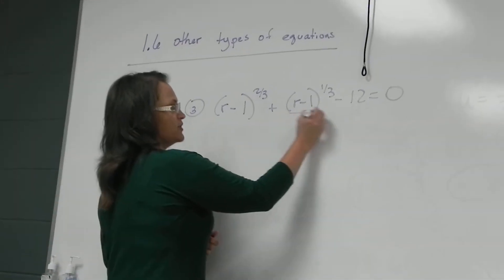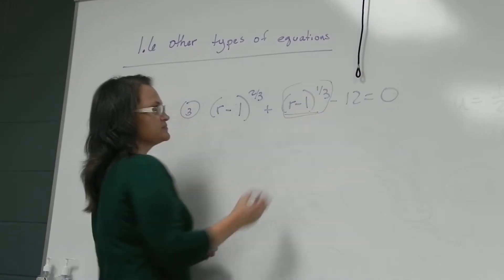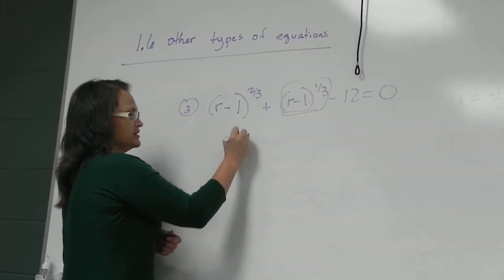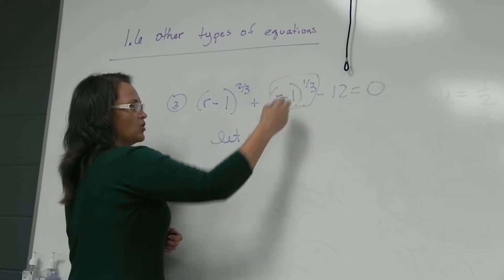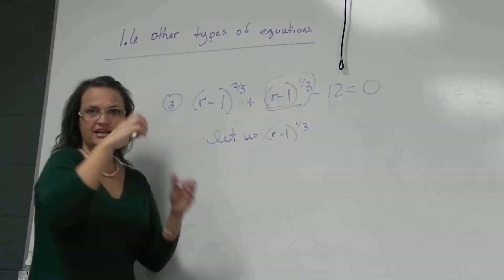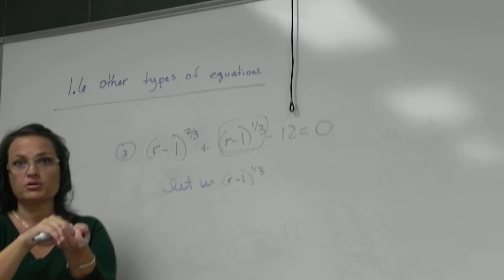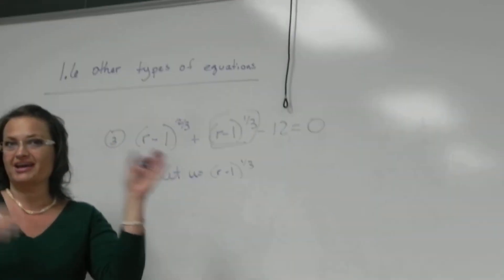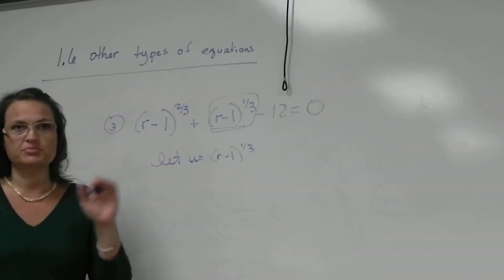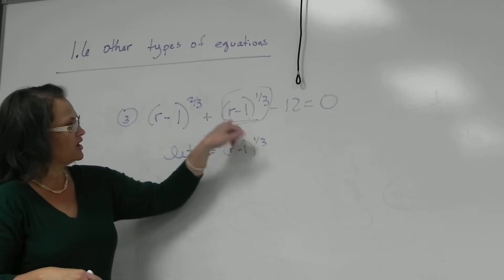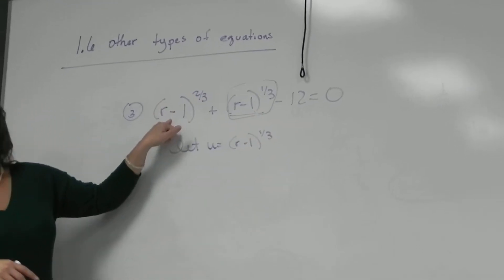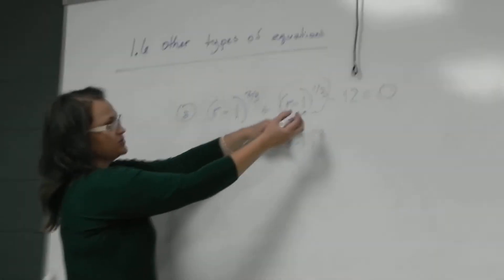So I want you to notice, if we call this whole thing u, so I'm going to let u equal this whole block. Now I know in the last problem we just let it equal just that variable, p^(-1), because the numbers in front had no relation to each other. But this whole block here is squared here. Now let's see this. Let me convince you. If you were to square this whole block, that exponent would multiply - 1/3 times 2 is 2/3.